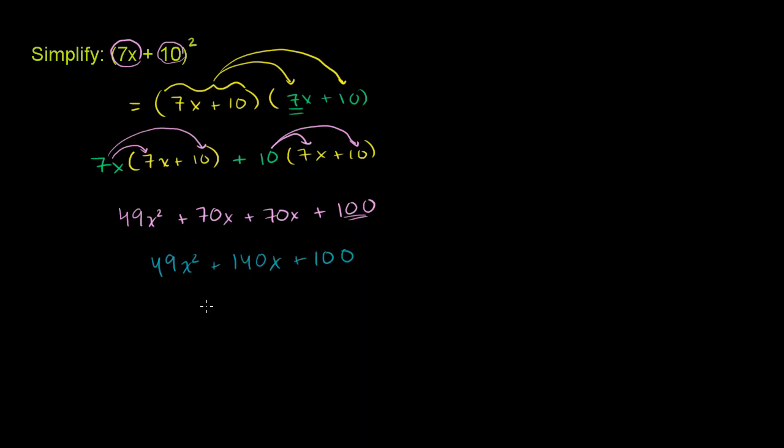So if you want to remember a quick way of squaring a binomial like this—and just remember it's coming out of the distributive property—but if you have to do it really fast, it's just going to be this first term squared, which is that, plus 2 times the product of these two terms. 7x times 10 is 70x, multiply by 2, you get 140x. And then the last term is just the square of the second term: 10² is 100.